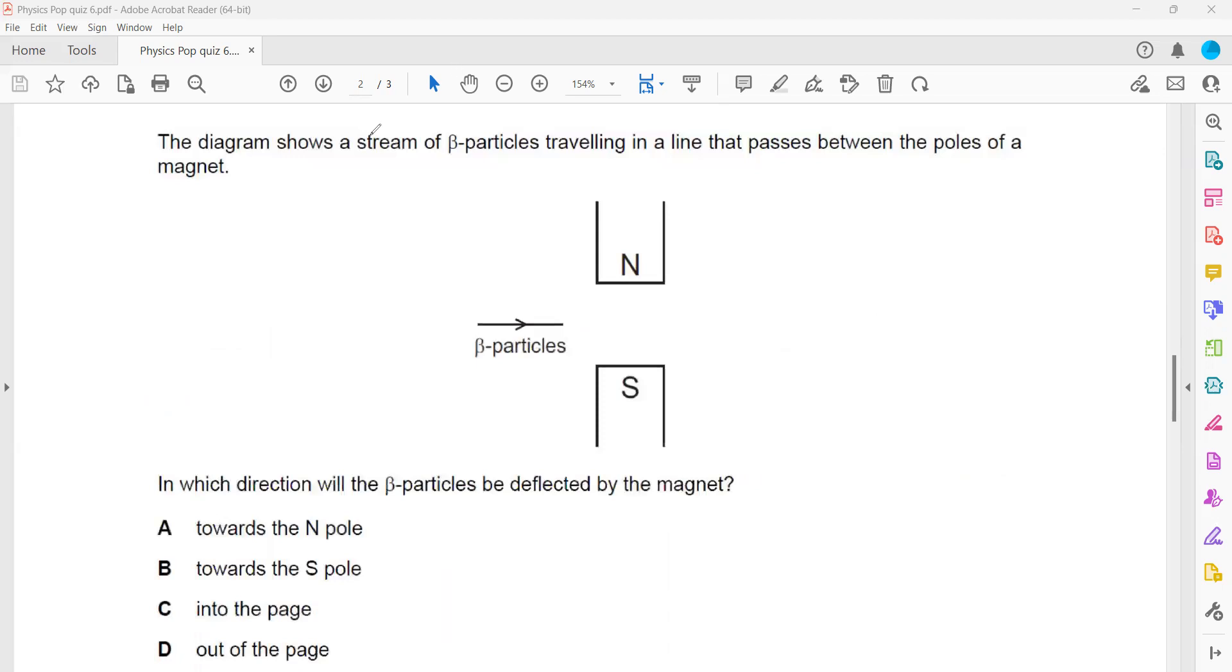In question 2, the diagram shows a stream of beta particles. So for beta particles, which hand will we use? We'll use the right hand. The first finger or index finger represents the magnetic field. So in this case, the magnetic field is pointing south, so your first finger, the index finger of the right hand, should point downward. Your second finger represents the direction of the particle or the motion of the particle.